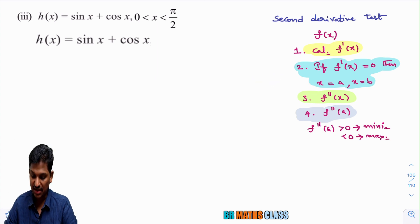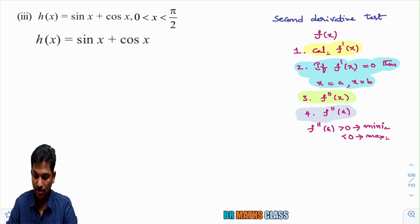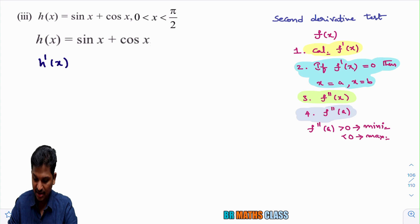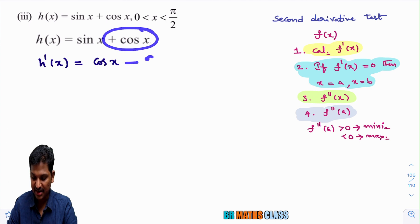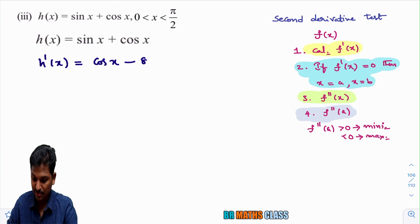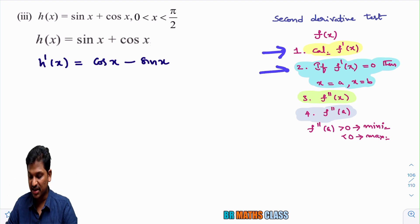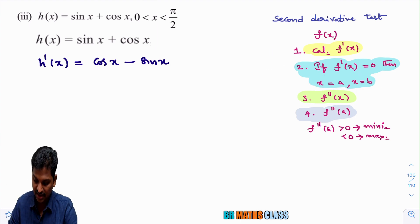In this problem, the function is named h(x) instead of f(x). Step one: calculate h'(x). You differentiate h(x). The derivative of sin x is cos x, and the derivative of cos x is minus sin x, so h'(x) = cos x − sin x. After calculating h'(x), the next step is to equate h'(x) to 0 to get the x values.